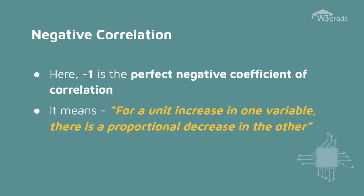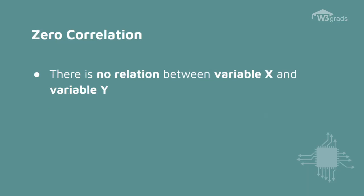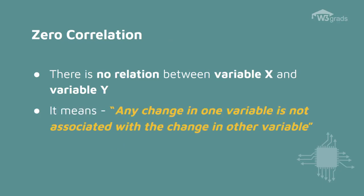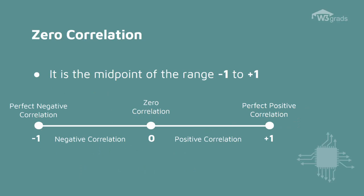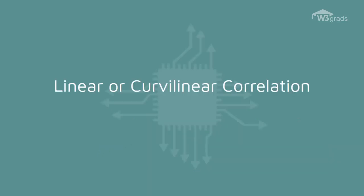The perfect negative correlation indicates that for every unit increase in one variable, there is a proportional unit decrease in the other. For example, speed and time have a perfect negative correlation. Now, the zero correlation means no relationship between the two variables X and Y, which means that the change in one variable X is not associated with the change in the other variable Y. For example, body weight and intelligence, shoe size and monthly salary, etc. The zero correlation is the midpoint of the range minus 1 to plus 1.